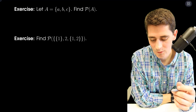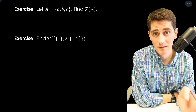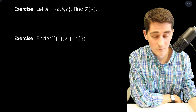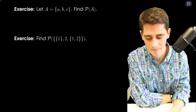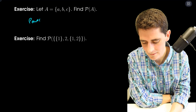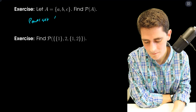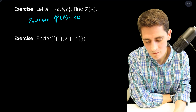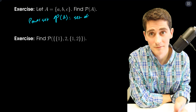So here we have an example where we're going to let A, B, and C be our set — capital A. And we want to find the power set, where script P means power set. The power set is, if I write this script P, that means the set of all possible subsets of A.